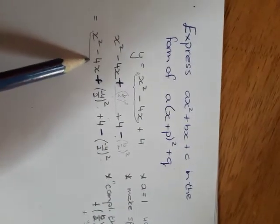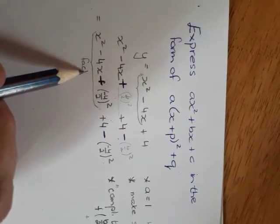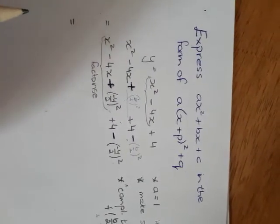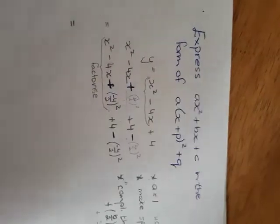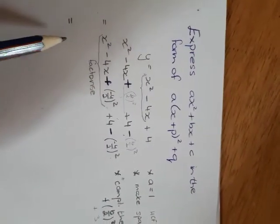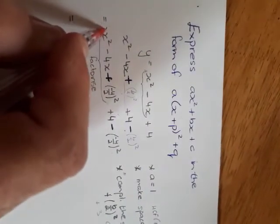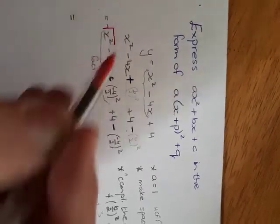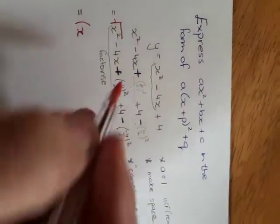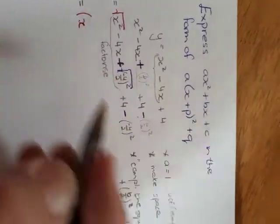Now this lot here, you should recognize from completing the square. These three terms, we will now factorize like we did when we completed the square. And that is earlier in your textbooks, under the factorization part of expressions. What we really do, we take the square root of the first term, and that becomes the first term in the bracket.